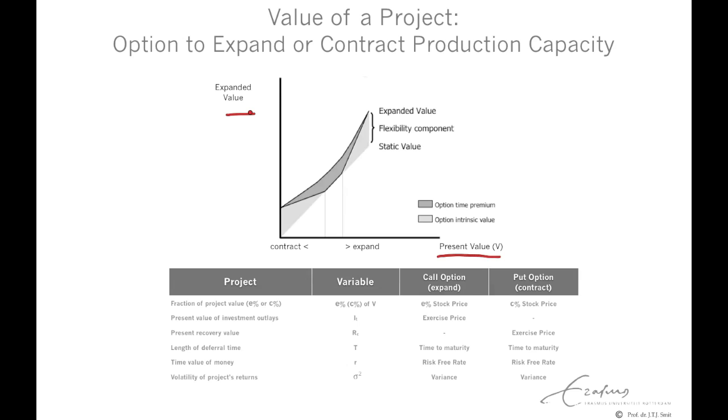First, consider the value of the production facility without any of the options. That's obviously a 45-degree line that gives the static value of the production facility.